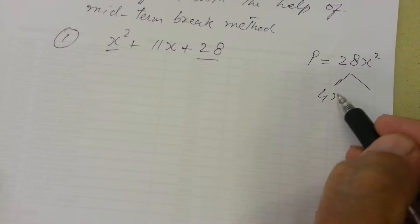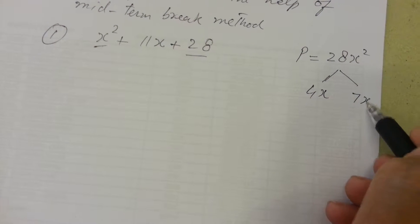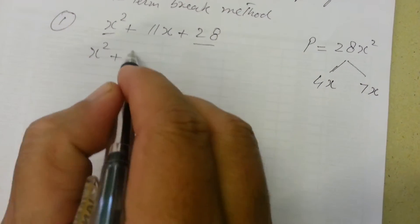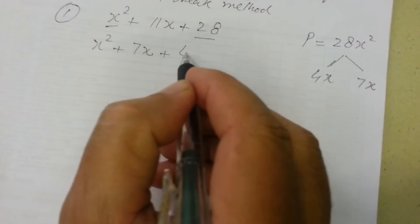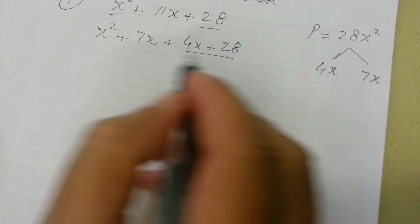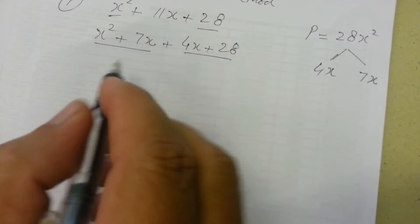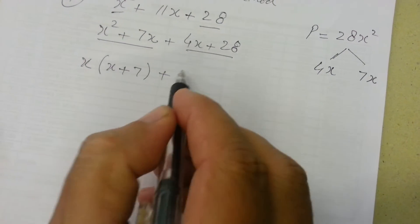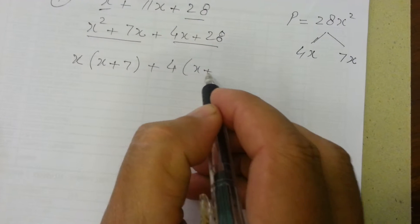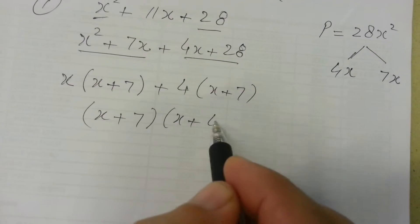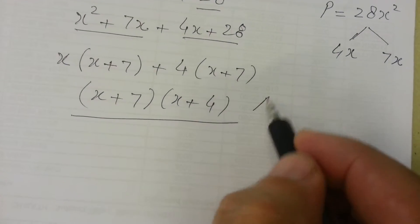So 4x and 7x meet the requirement. So we write x squared plus 7x plus 4x plus 28. Taking x common from the first two terms gives x(x plus 7), and 4 common from the last two gives 4(x plus 7). So the answer is (x plus 7)(x plus 4).